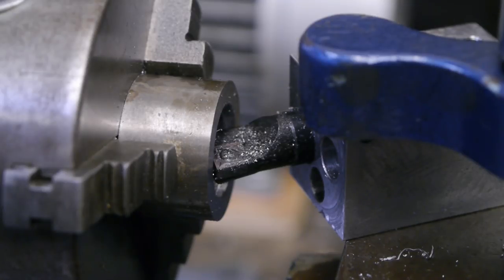I want to cut a bit of a lead-in for the thread, but I don't want to change the angle on the top slide because it's a lot of work to get it back square with the lathe. So I'm using my boring bar at a bit of a strange angle, and it's actually hanging off the side of the tool rest.